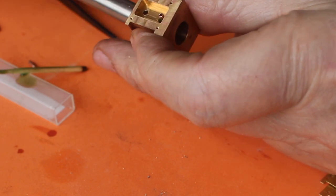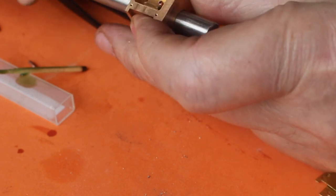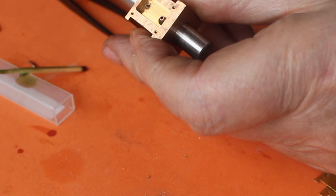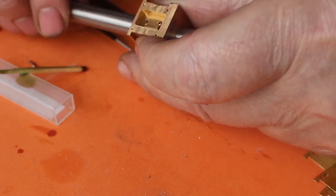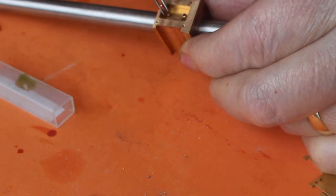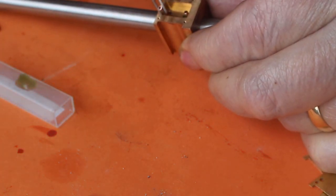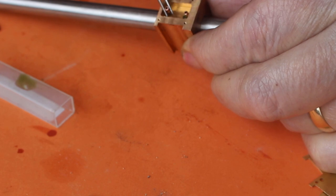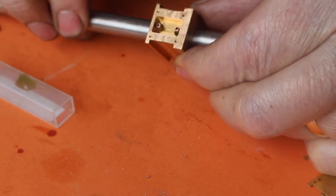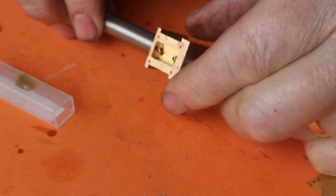I'm just going to put a bit of bar in the bore of the bearing just to make sure it doesn't go too far down. That should be fine there. Okay looks good.